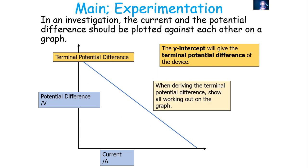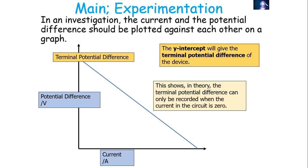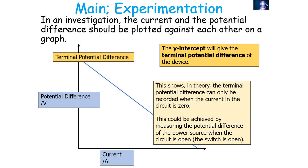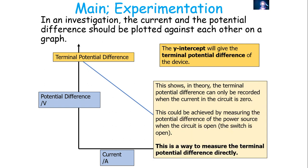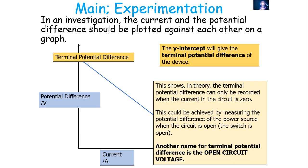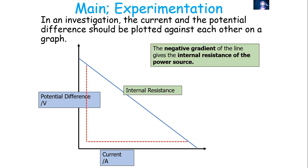When deriving the terminal potential difference, you've always got to show all working out on your graph. The terminal potential difference can only be recorded when the current in the circuit is zero, which is achieved by measuring the potential difference of the power source when the circuit is open — i.e., if a switch is open in the circuit. This is another way to measure the terminal potential difference directly, so another name for this value is the open circuit voltage.